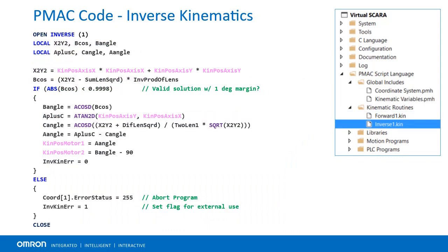Inverse kinematics are responsible for computing motor positions from tooltip or axis positions. They are constantly run during motion program execution because they are responsible for computing the positions the motors will be commanded to every segment. The entire inverse kinematic routine is contained between open inverse one and close.